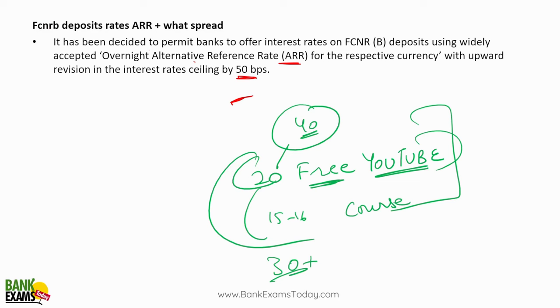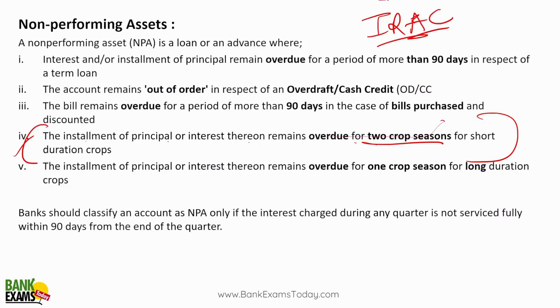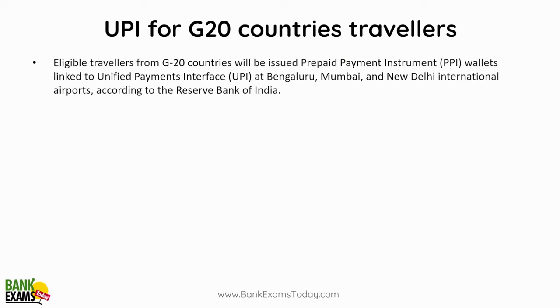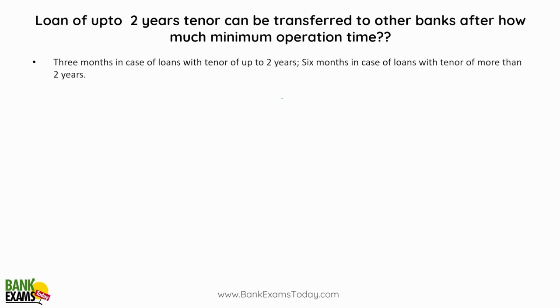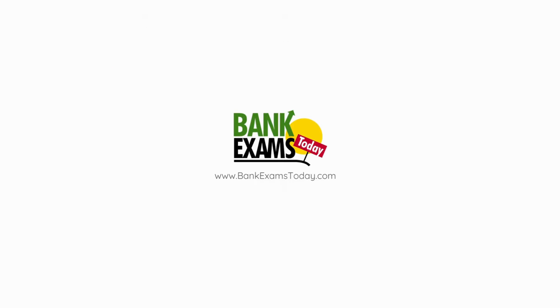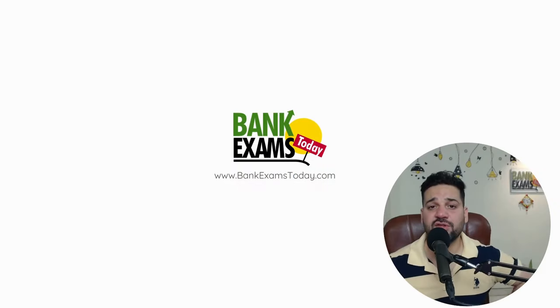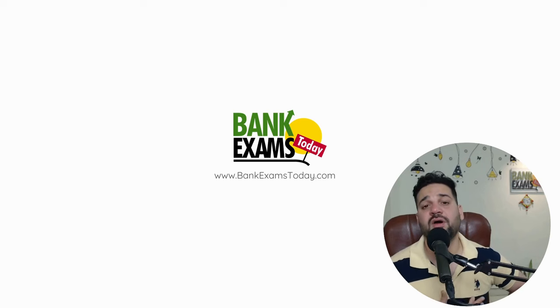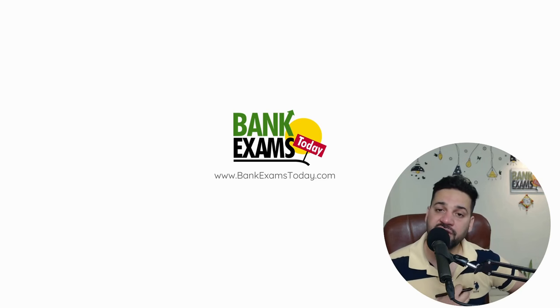Topics like NPA definition, UPI for G20 countries, and loan tenure transfer rules — loan up to 2 years of tenure can be transferred to other banks after 6 months of operation; in case of tenure more than 2 years, after 3 months — these were all covered. I can happily say that a lot of questions were from our course, our free YouTube videos, and our free blogs, which are freely available.